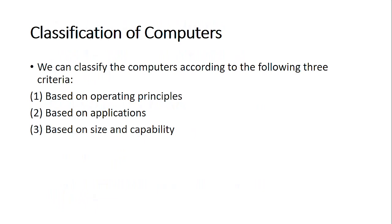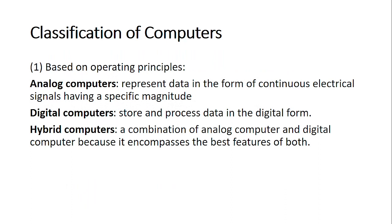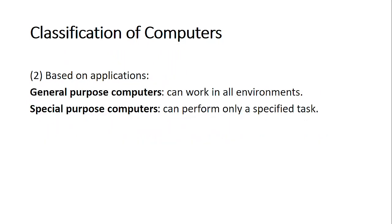Computers can also be classified based on operating principles, applications, and size and capability. Based on operating principles, some computers use analog signals, others use digital signals, and the combination of both gives us hybrid computers. An example of a hybrid computer is a modem, which can modulate signals from analog to digital and demodulate digital signals back to analog. Having hybrid computers is a very important achievement in the history of computing.